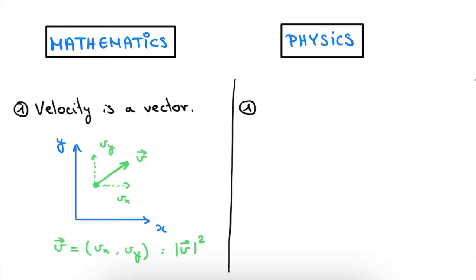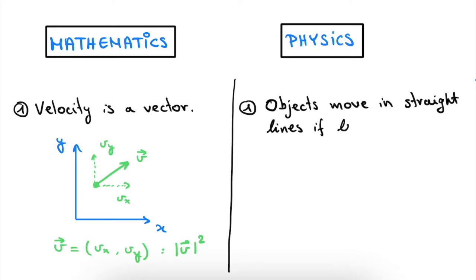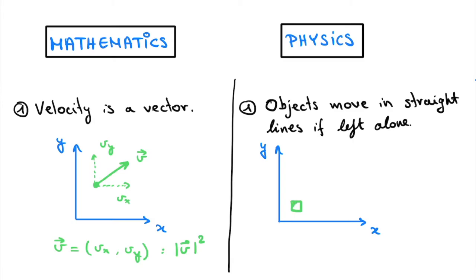On the physics side, we start with Newton's first law, which states that objects move in straight lines if left alone — meaning if there are no forces acting on them. The reason we don't see this behavior around us is because the environment in which we live does not allow for objects to be left alone. Here on Earth, there is no escaping gravity, and therefore each object we see moving is always subject to at least one force.